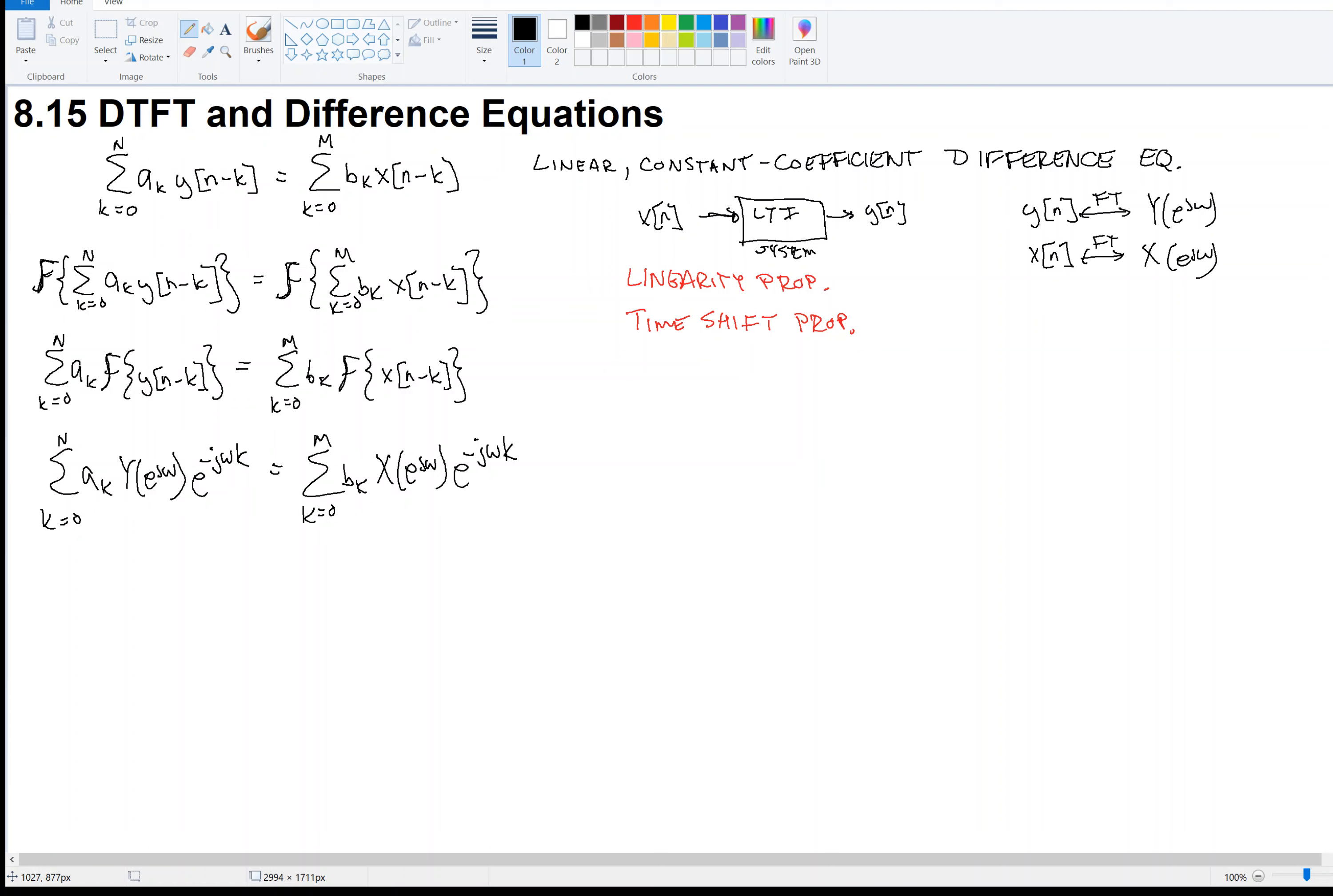So now notice that capital Y and capital X on the right do not depend on the iterator k. So they can come out of the summation. And I'm just going to switch the order k omega. Usually we write the k in front of the omega. I don't know why I did it after in the previous step, but I'll switch that here. So here, and I'll bring out the x there, e to the minus j k omega, like this.